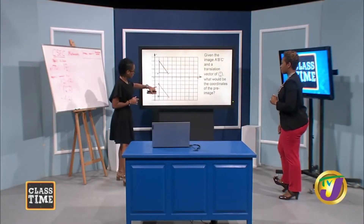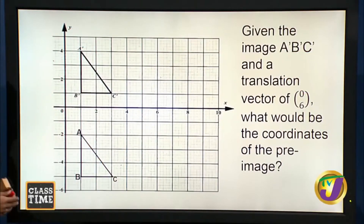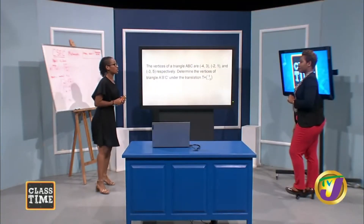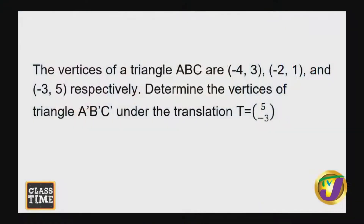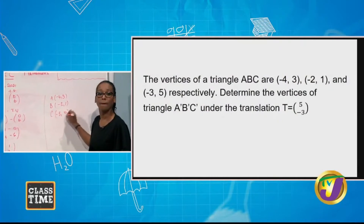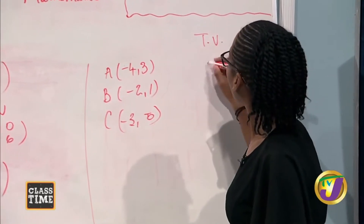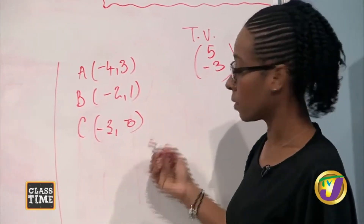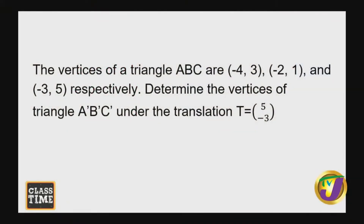We realize that our object uses A, B, C — without prime — because it is the original. Now, the vertices of a triangle A, B, C are negative 4, 3; negative 2, 1; and negative 3, 5, respectively. Determine the vertices of triangle A prime, B prime, C prime under the translation T equals 5, negative 3. Viewers can try this at home! The translation vector is 5, negative 3.